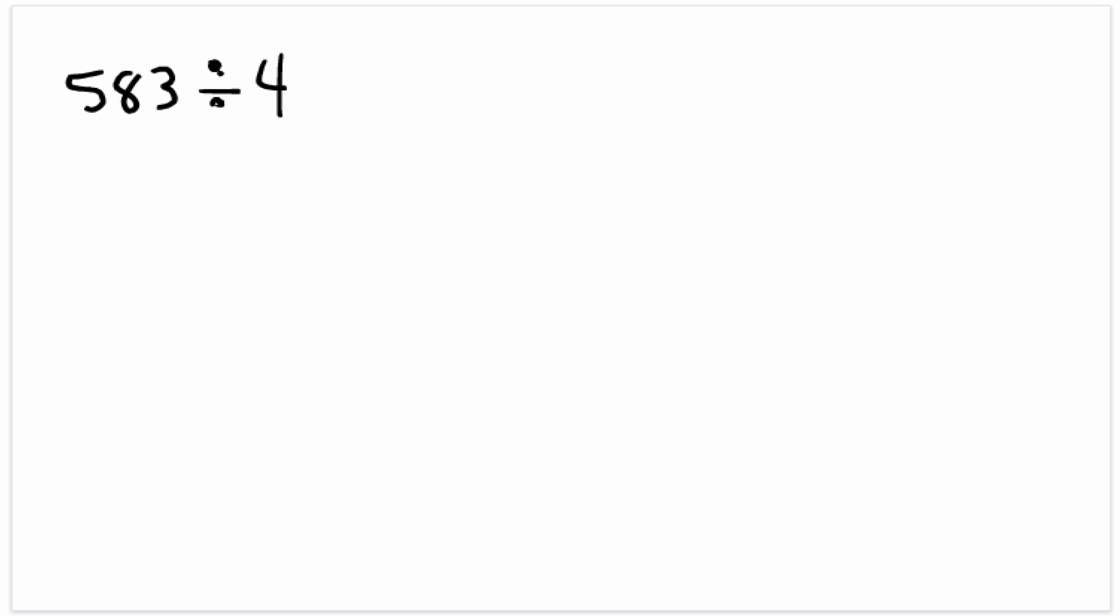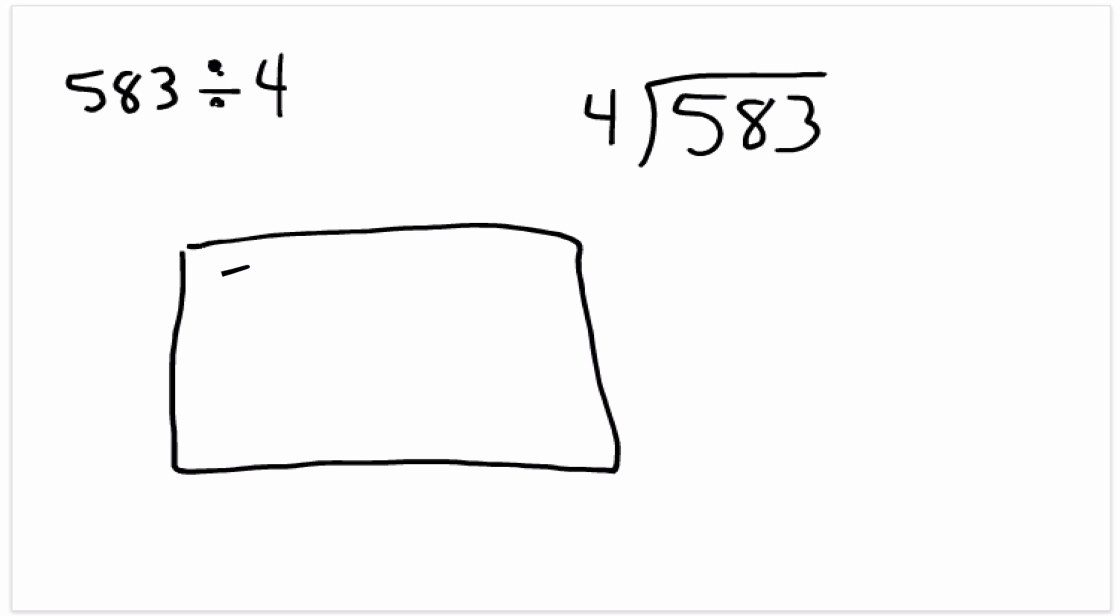First off, that looks like this in the traditional way of doing it. But then the other thing I think about is, basically, this is kind of like saying we've got a rectangle, and that rectangle has an area of 583, and we know that the height of that rectangle is 4, and our job is to figure out what is the width of that rectangle. So that's what I think of when I see a division problem.